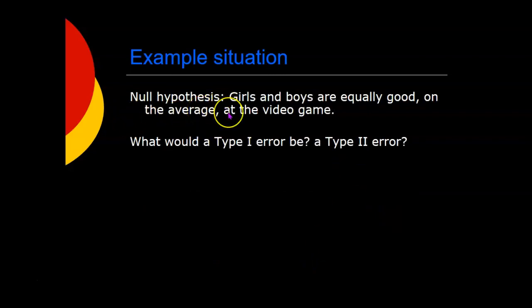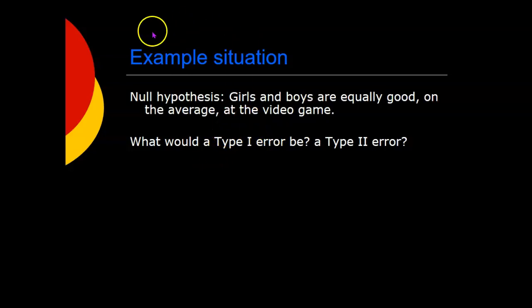In our example of testing girls and boys at a video game, the null hypothesis was that girls and boys are equally good — there is no difference in the general populations. A type 1 error would be rejecting the null hypothesis when it's true, meaning saying there is a difference between how good girls and boys are when really there isn't. A type 2 error is not rejecting the null hypothesis when you should have, because it's false — saying we can't rule out that they're equally good, but really they're not equally good and there is a difference.